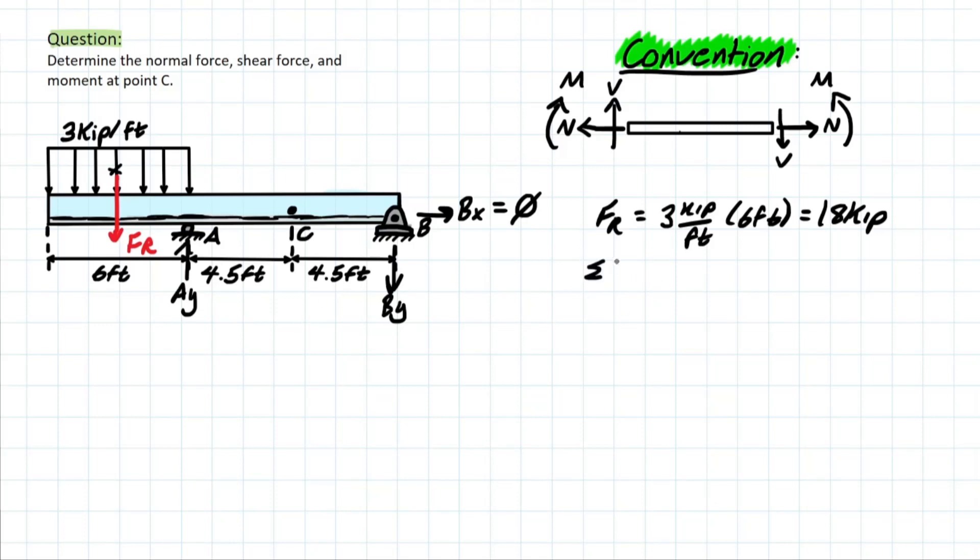And now we can go ahead and solve for these Y components. So let's go ahead and take the moment at B just for the start. And let's solve for that A force first. And we can do that by taking negative AY since it's going clockwise around B. That's going to be nine feet away. And then we have the positive FR, which we solve for, which is 18. And we have the nine plus six divided by two, which is three. So that's going to be 12. Solving for AY, we are going to be left with 24 kip.